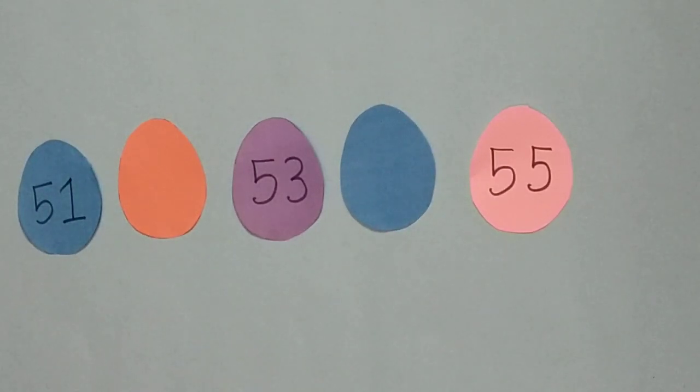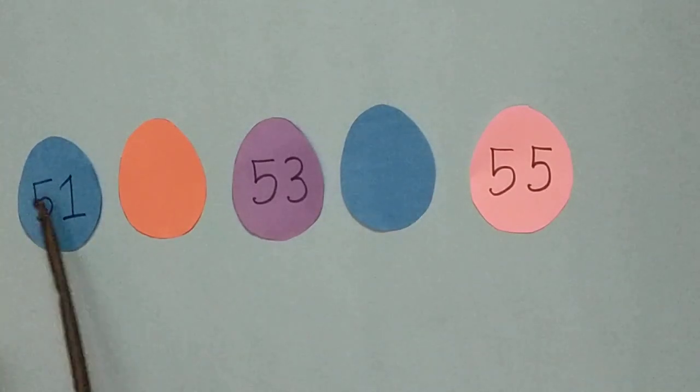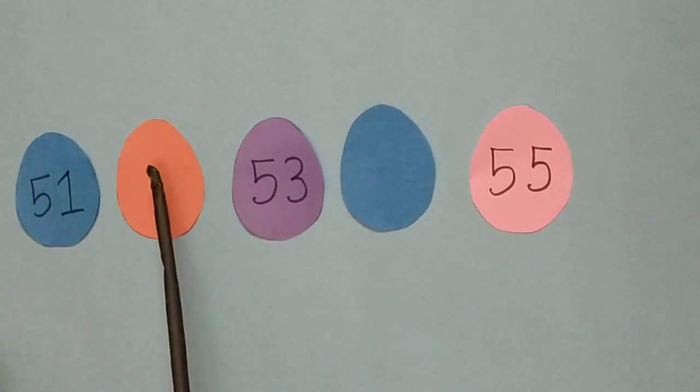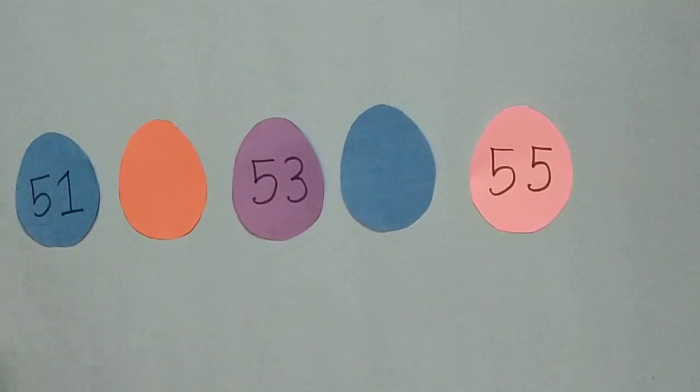But ducky is so silly. Look, there are also some numbers missing. Mr. Ducky is very bad at math, right? Yes. Again you have to help him, right? Look. Fifty-one. What number will be here?